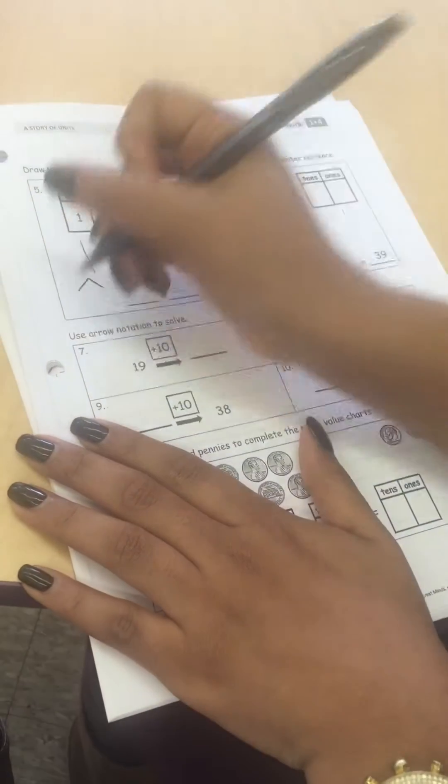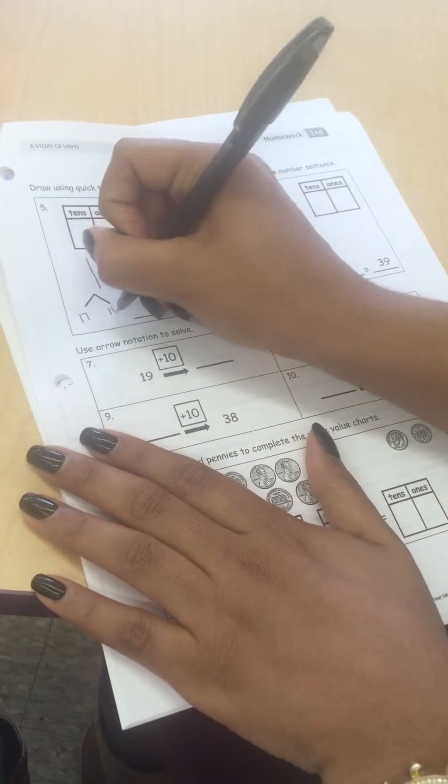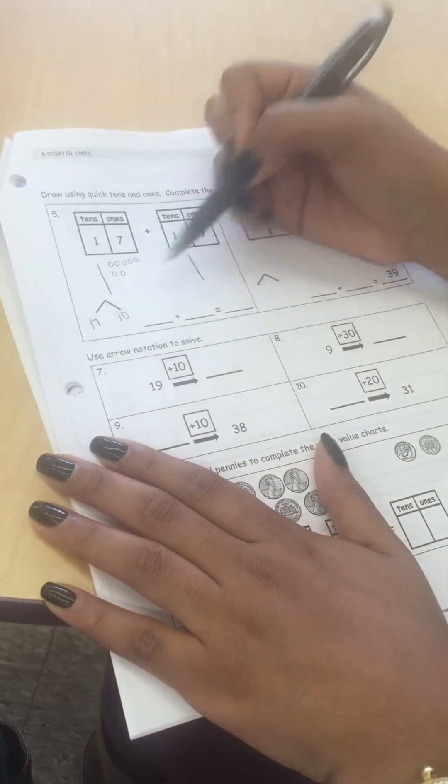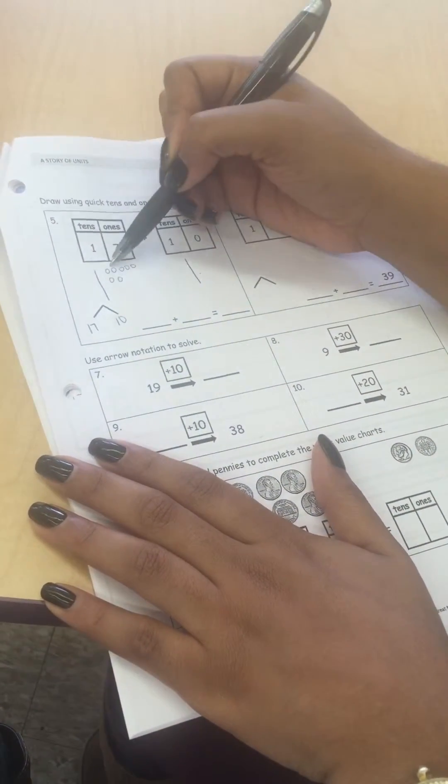My first part is 17, my second part is 10. Now I'm looking to find my total, so I'm going to count the tens first, then go back and count the ones.